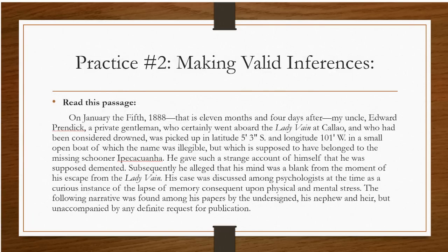Here's practice number two — making valid inferences: 'On January 5th, 1888, that is eleven months and four days after my uncle Edward Prendick, a private gentleman who certainly went aboard the Lady Vane, and who had been considered drowned, was picked up in latitude 5°3" south and longitude 101° west, in a small open boat of which the name was illegible, but which is supposed to have belonged to the missing schooner Ipecacuanha. He gave such a strange account of himself that he was supposed demented or insane. Subsequently, he alleged that his mind was a blank from the moment of his escape from the Lady Vane. His case was discussed among psychologists at the time as a curious instance of the lapse of memory consequent upon physical and mental stress. The following narrative was found among his papers by the undersigned, his nephew and heir, but unaccompanied by any definite request for publication.'